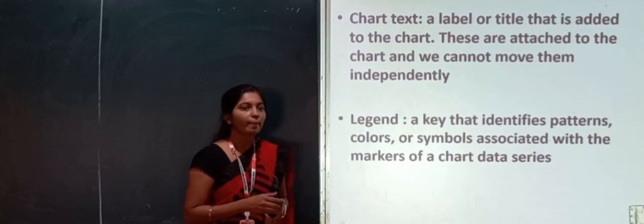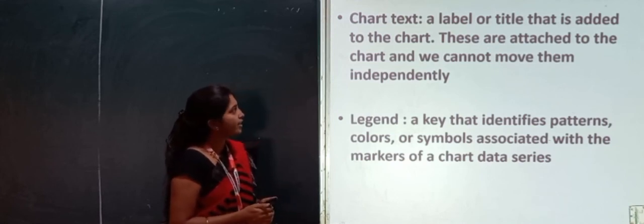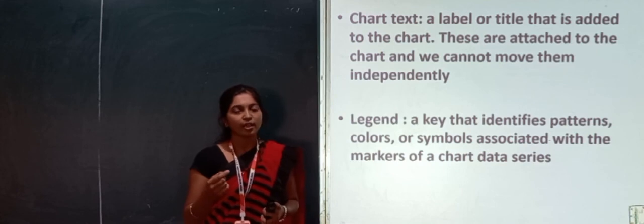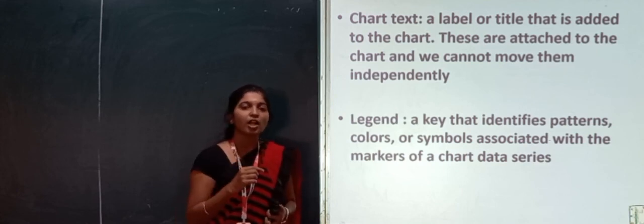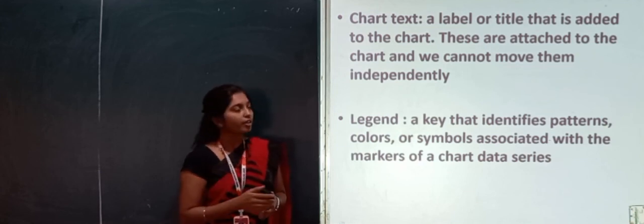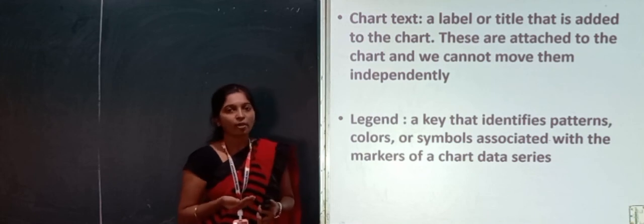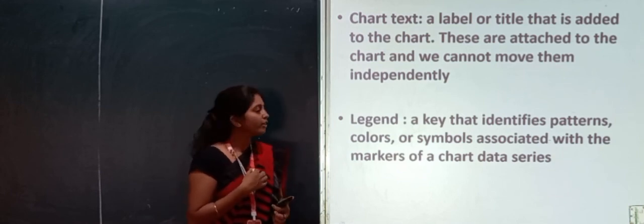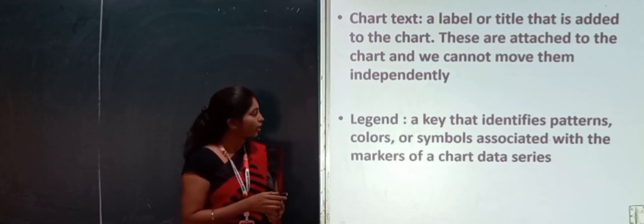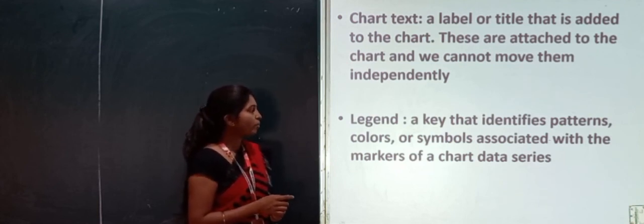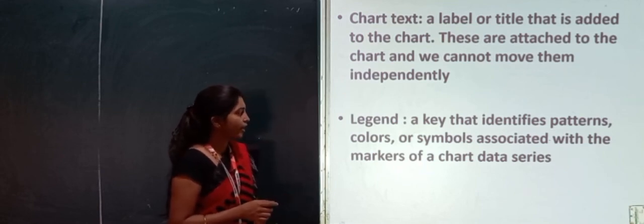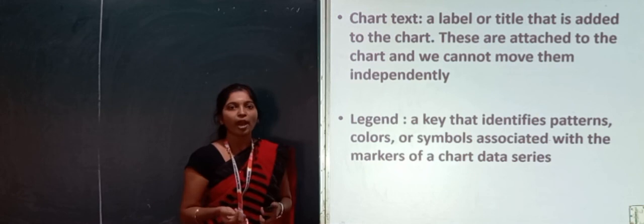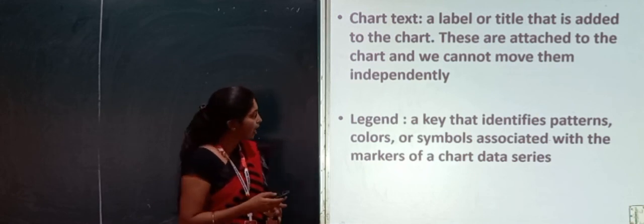Then chart text — a label or title that is added to the chart. It may be a chart title, axis name, or legend name. Any text in the chart is called chart text and is fixed when the chart is created. Then legend — a key that identifies patterns, colors, or symbols associated with the markers of a chart data series. It represents different series of data and identifies different patterns with each color.